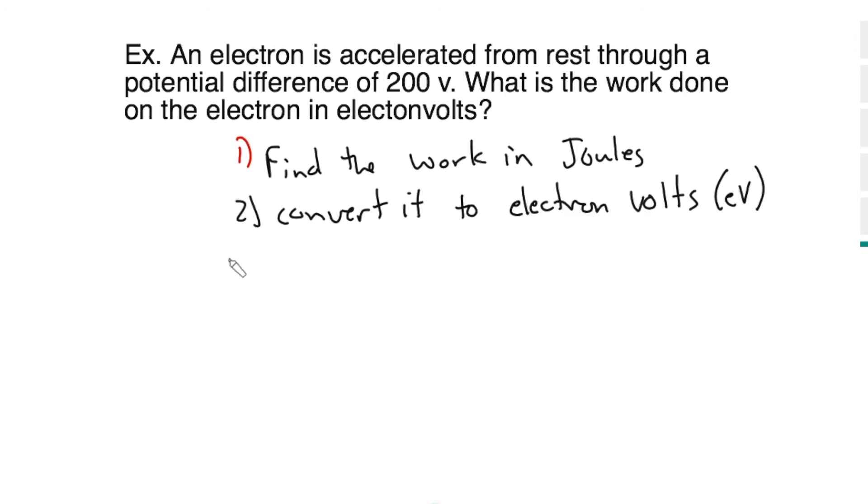So the way we'll do that is we know, how am I going to find the work? Well, work equals V times Q. We were given 200 volts. We know the charge of an electron is 1.6 times 10 to the minus 19th Coulomb. Now, I can solve for the work, and this will be your work in Joules.